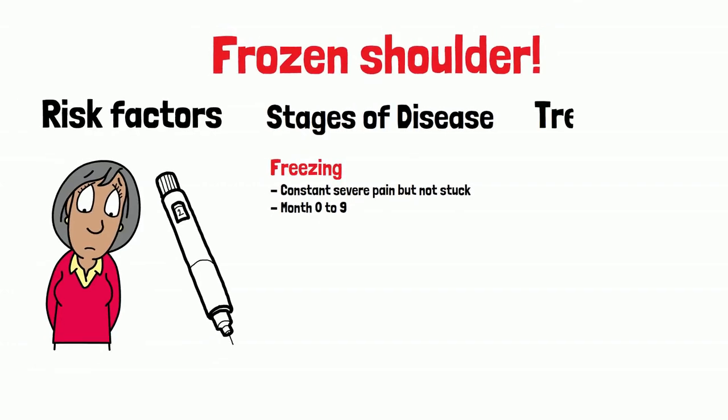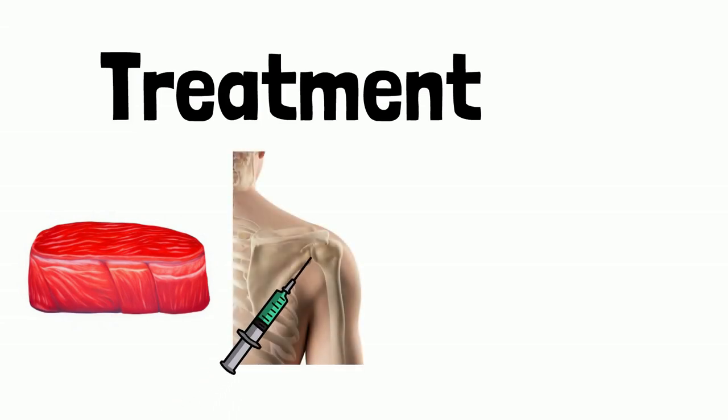Now, what would you do to treat her? In the freezing phase, think of a cut of steak that was just placed in the freezer for an hour. It's stiff, but will thaw pretty quickly. In this case, a steroid shot in the joint can almost instantly reverse the stiffness and pain. It's like a magic bullet.